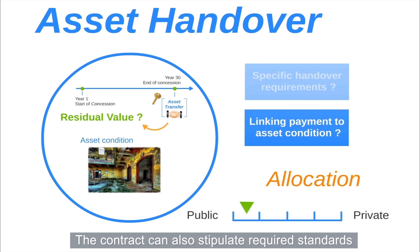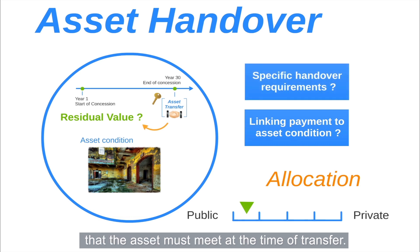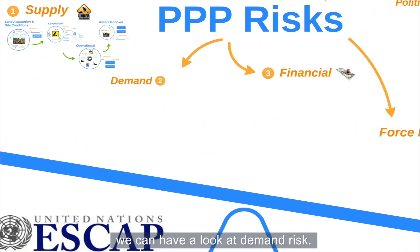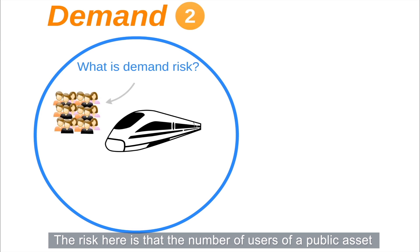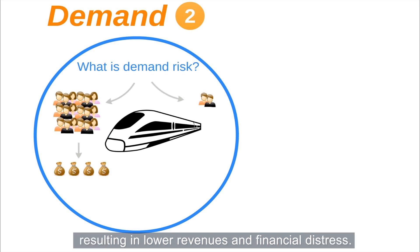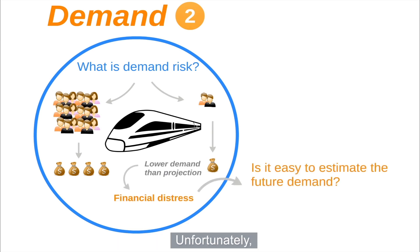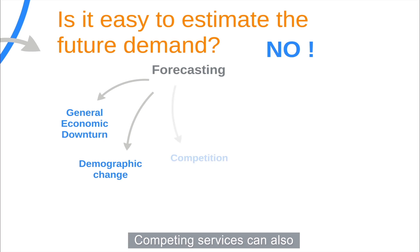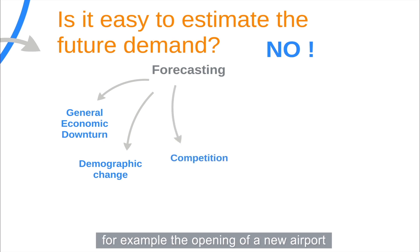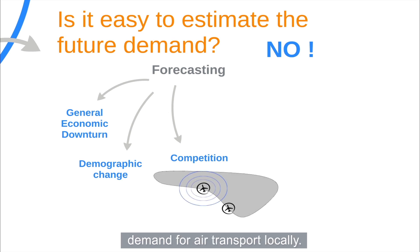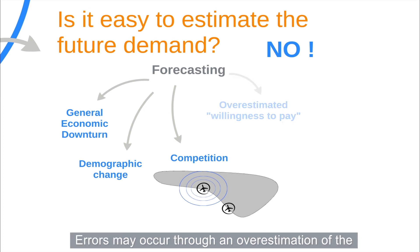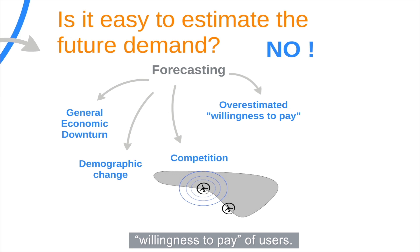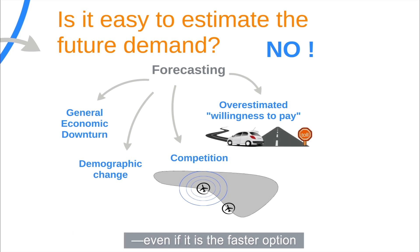Now that we have covered supply-side risk, we can look at demand risk. The risk here is that the number of users of a public asset may be lower than anticipated, resulting in lower revenues and financial distress. Unfortunately, forecasting demand over a long period can be particularly difficult. A number of factors can influence demand for public services, such as economic and demographic trends. Competing services can also reduce anticipated demand — for example, the opening of a new airport in a nearby region might impact demand for air transport locally. Errors may also occur through overestimation of users' willingness to pay; some users may decide not to use a toll highway, even if it is faster, simply because they view the cost as unjustified by the time saved.